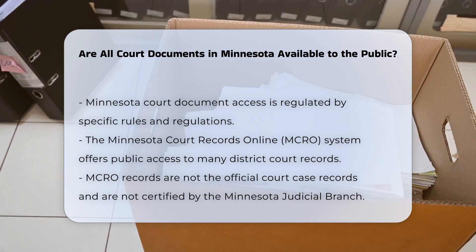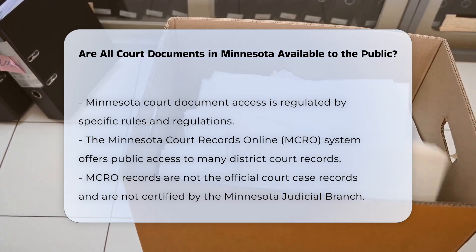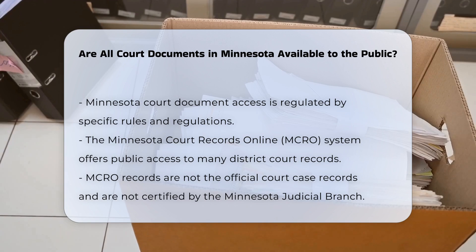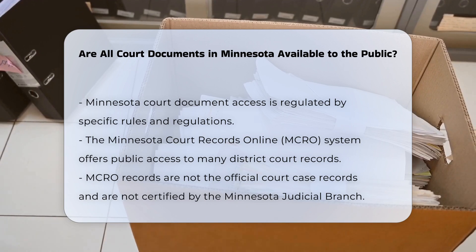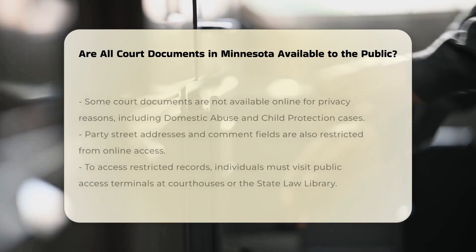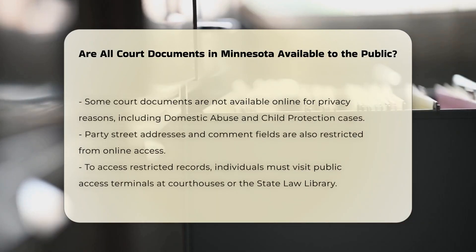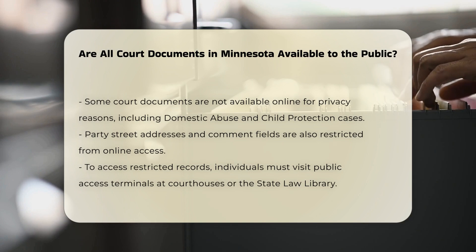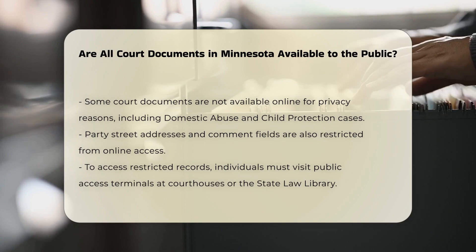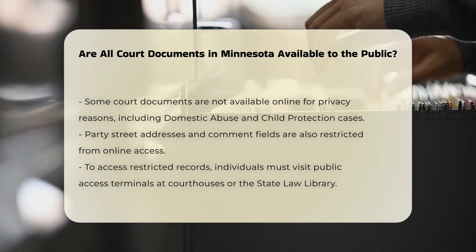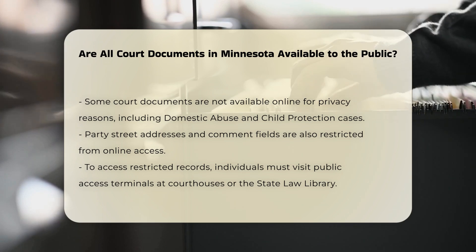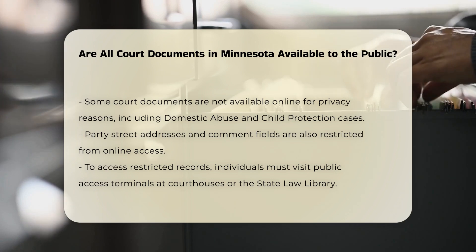Limitations on online access. Not all court documents are available online through MCRO. For privacy reasons, certain case types such as domestic abuse and harassment restraining order cases, child protection, CHIPs, and juvenile delinquency felony D16 cases, and civil commitment case types are not accessible online. Additionally, party street addresses and comment fields in all case types are also not available online.